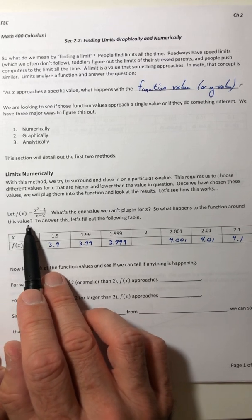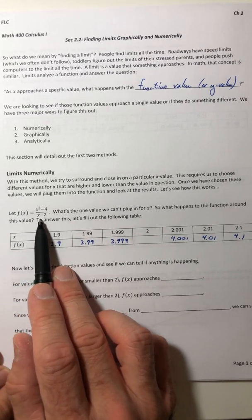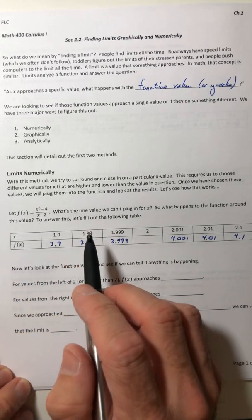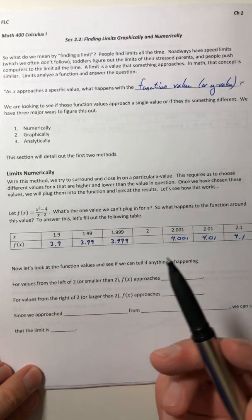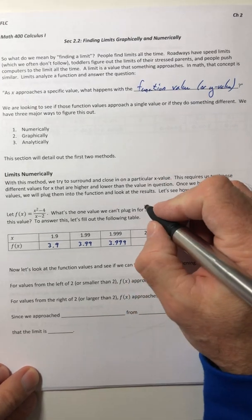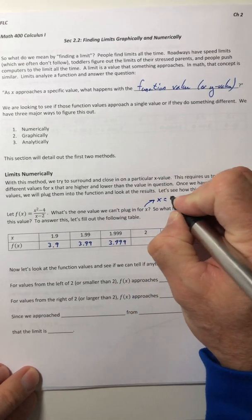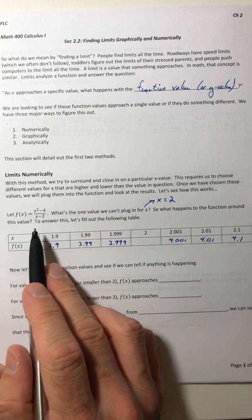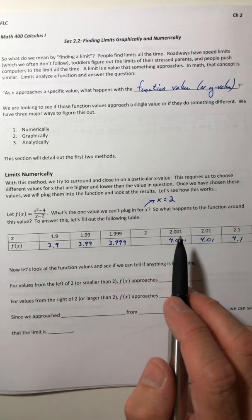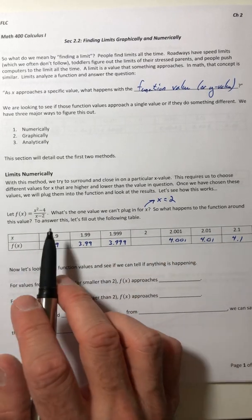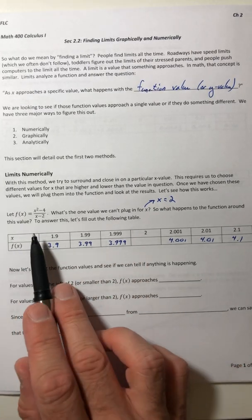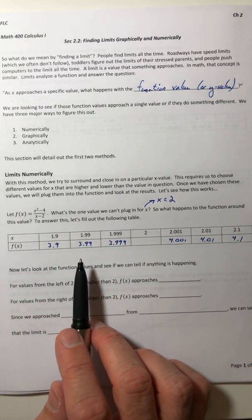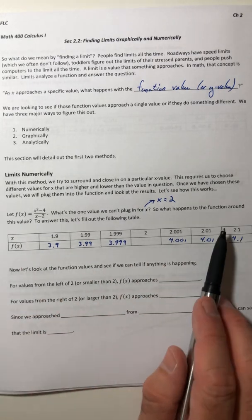Numerically, we're trying to surround and close in on a particular x value to see what's happening with the function value or the y value. Like, are we also closing in on something, or are we going like this, or what's happening? So let's start with this function, f of x equals x squared minus 4 over x minus 2. So as it stands, what's the one value you cannot plug in for x? Well, that would be x equals 2 would make the function undefined. So what happens to the function around that value? Well, to answer that, we're going to fill out this table.